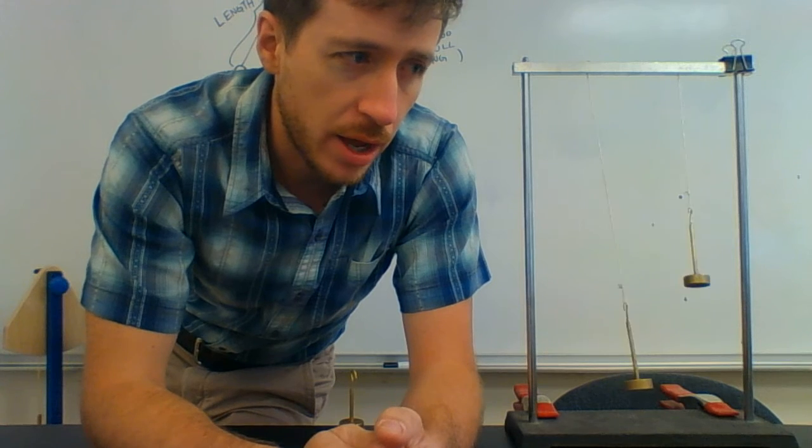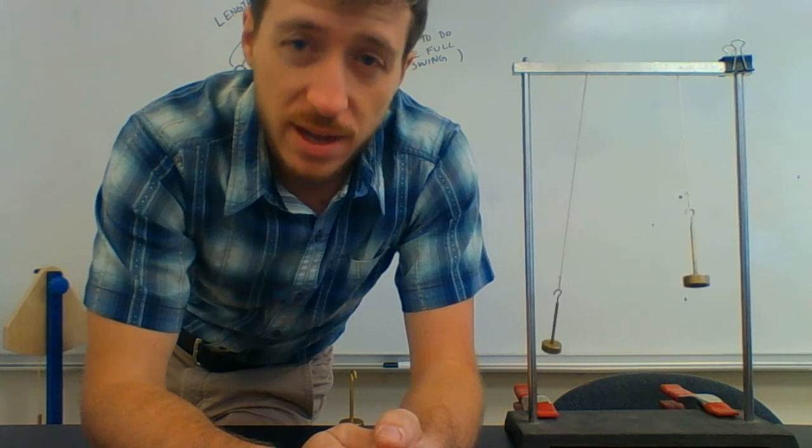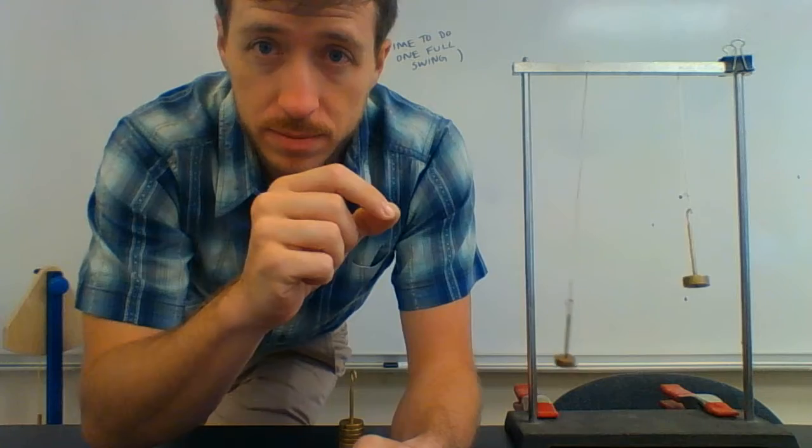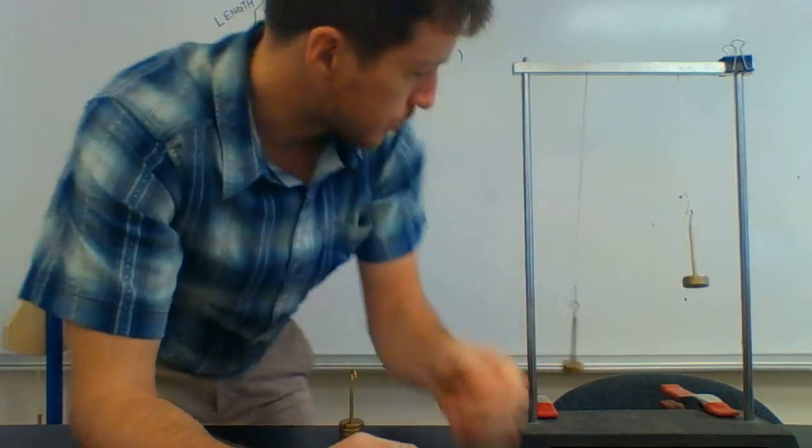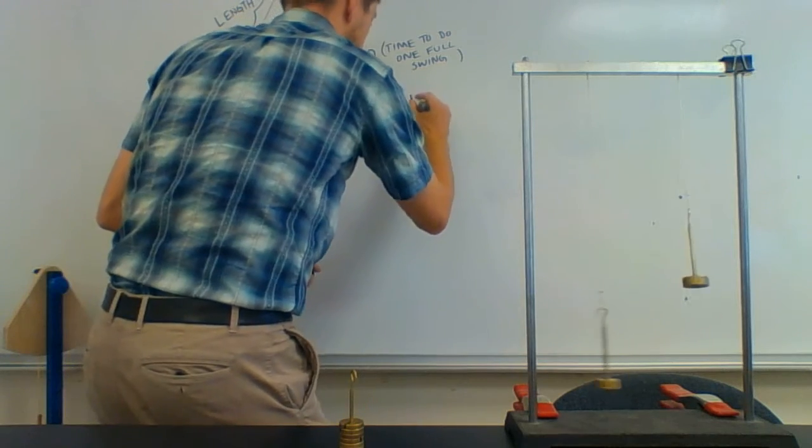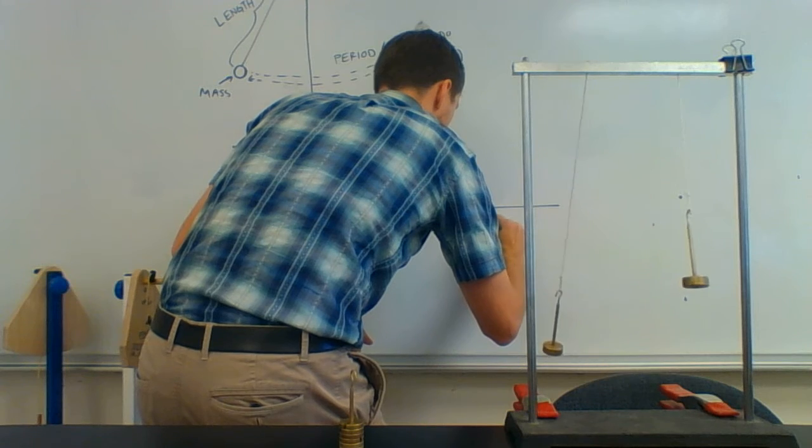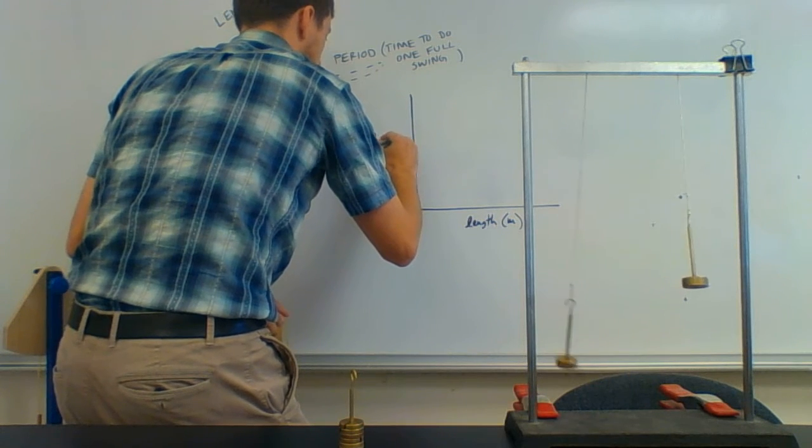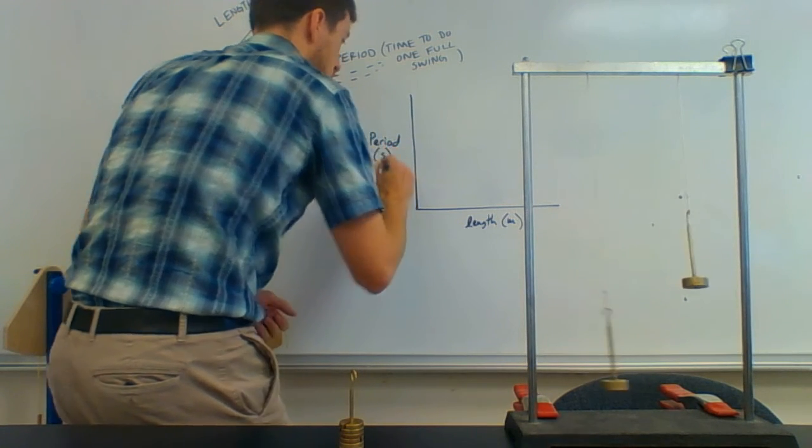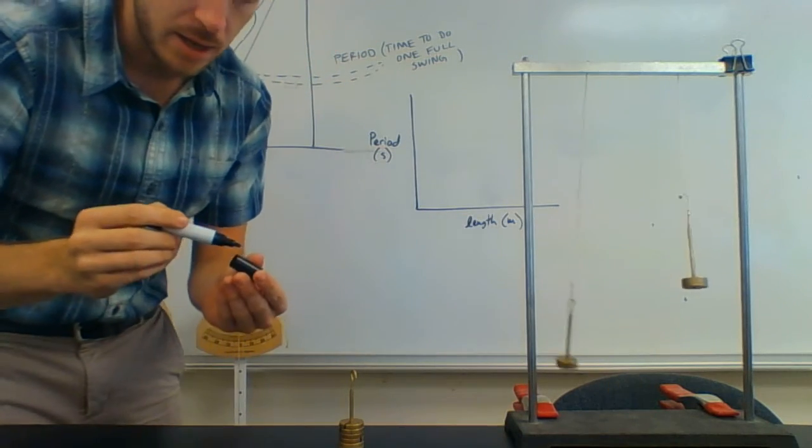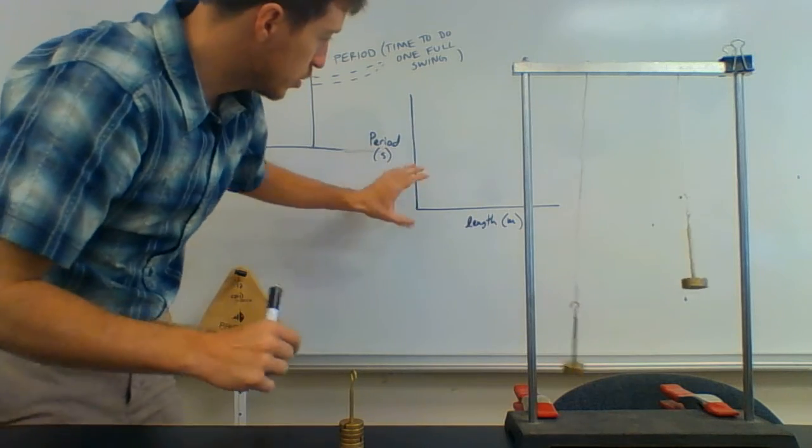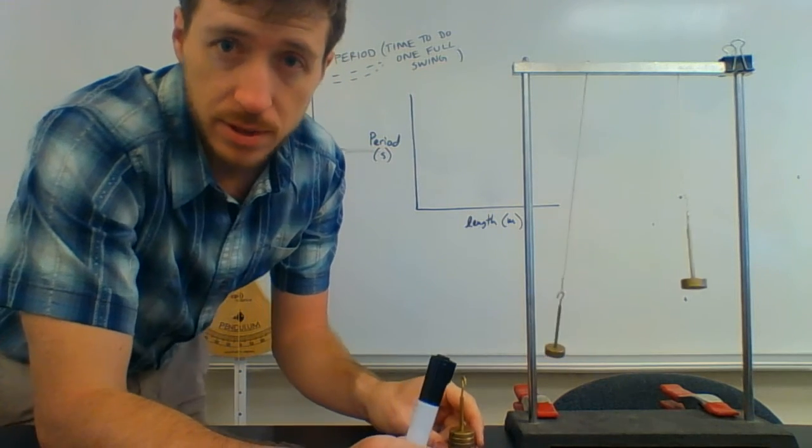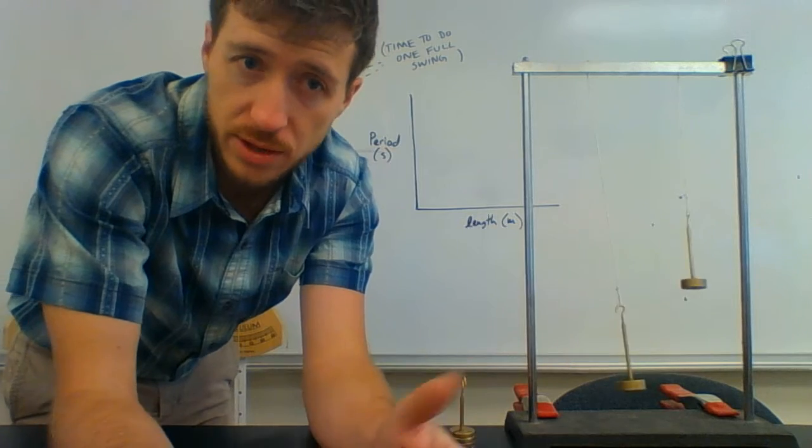Now when we get back on Wednesday, we're actually going to test your models. And the end goal of this class is that you guys are going to have a model, so like a graphical relationship between length and period. It should look something like this. You should get a graph that looks like that, looking at how the length affects the period. And using your graph, every student needs to leave this class with a graph. So within your group, you're all going to work together and each one of you is going to have a graph.